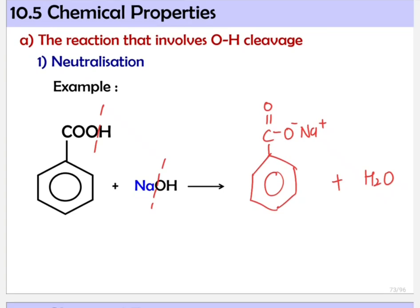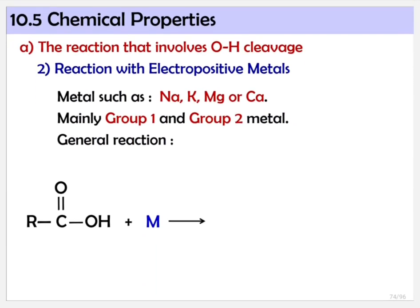Now we go to the second reaction involving cleavage at OH — reactions with electropositive metals. Metals that can be used as reagent are sodium, potassium, magnesium, or calcium — generally Group 1 and Group 2 metals. What happens here is cleavage at hydrogen. You get RC double bond O O⁻, and M is positively charged — make sure the charge is written. The hydrogen that comes out will form hydrogen gas H2, with a balancing coefficient of one-half. This is similar to reactions of alcohol with metals.